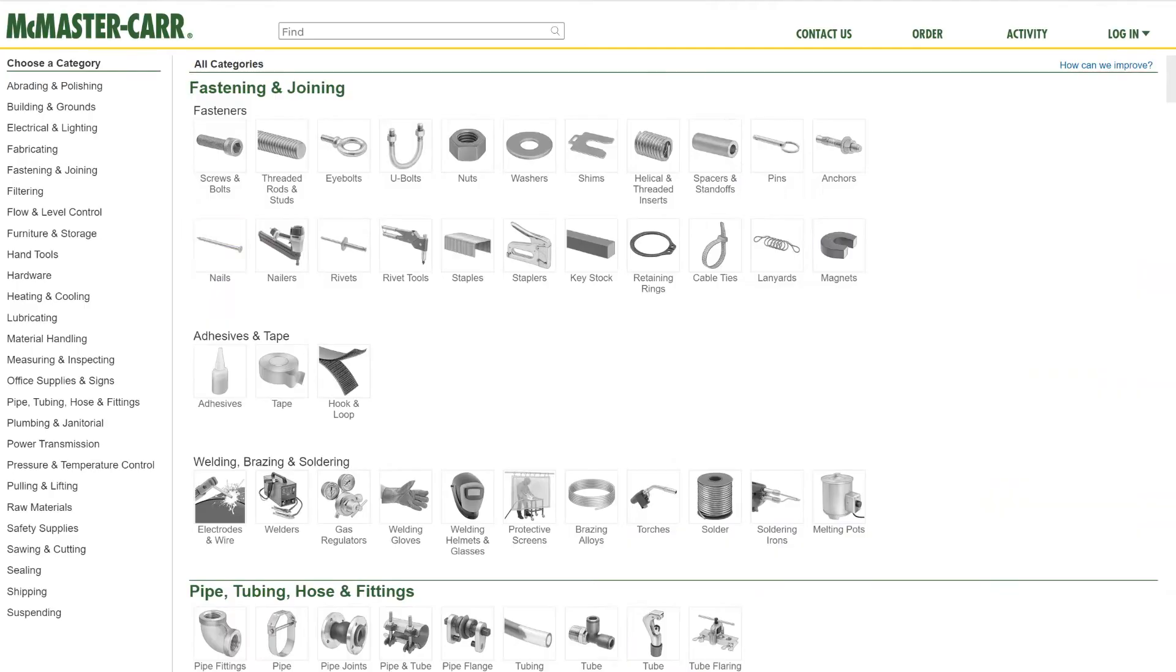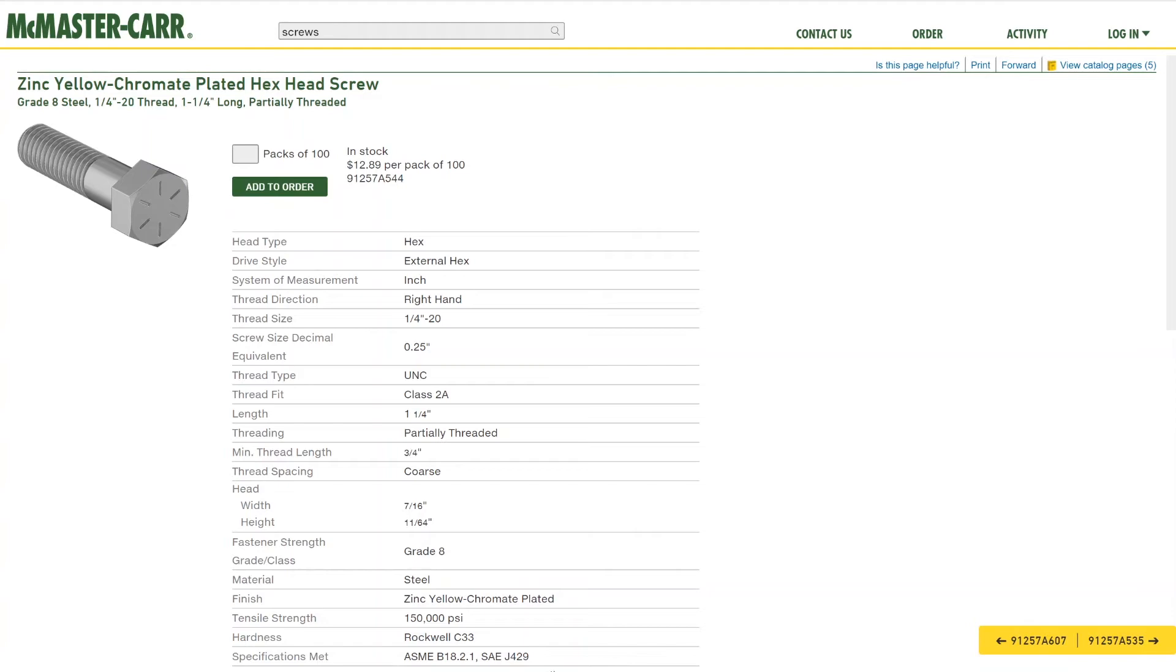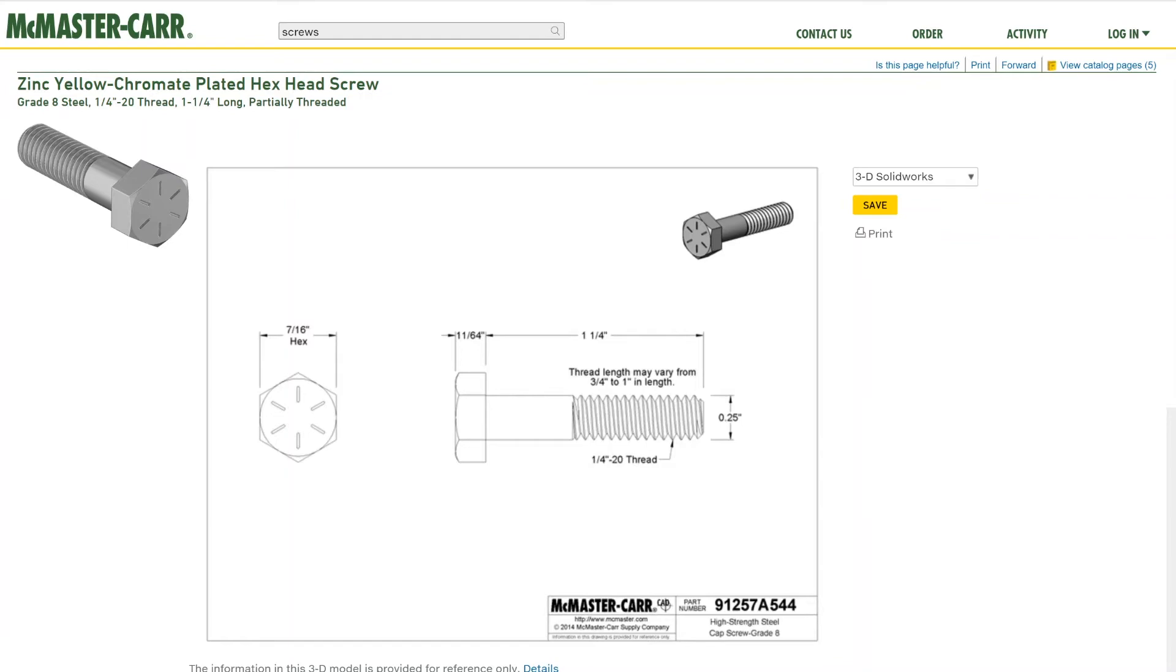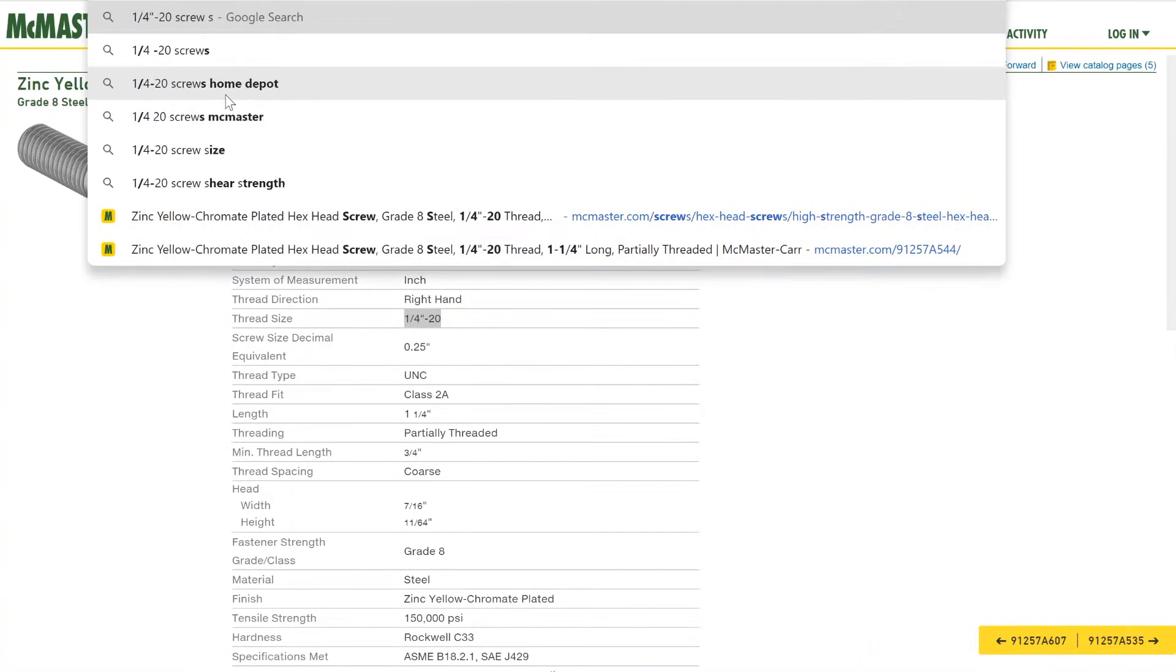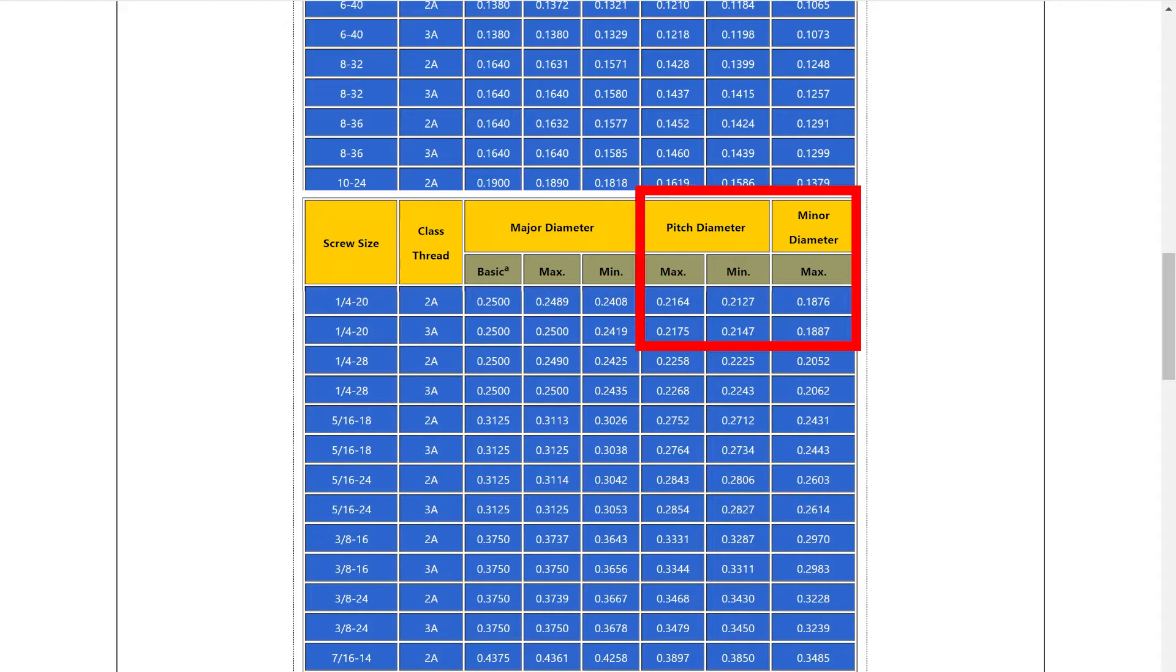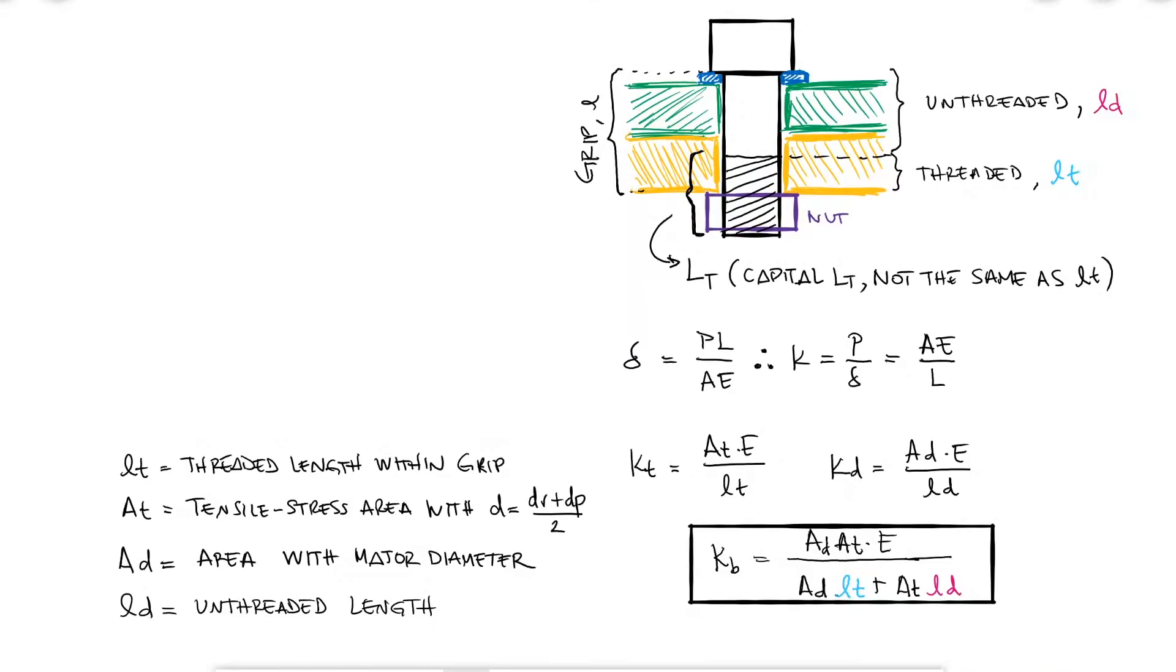So for example, if you go into McMaster and look up a cap screw, you can easily find all the dimensions you need to estimate the bolt stiffness, like the threaded length. If there's anything else you need that does not show up in the vendor's website, you just look it up and websites with ANSI charts will have everything you need for the other variables, like for example, the pitch diameter and the minor diameter to calculate AT.